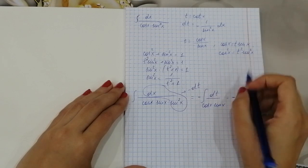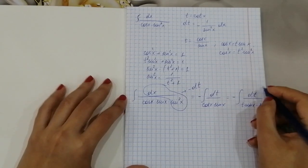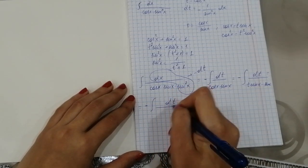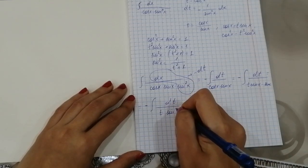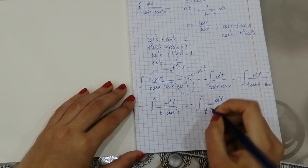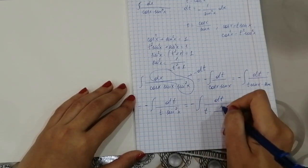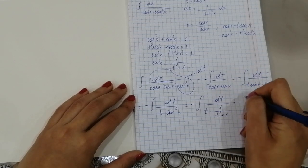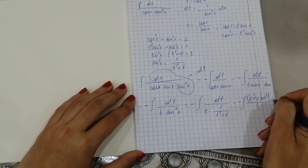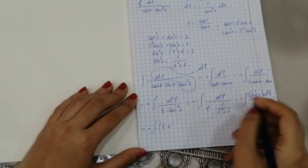Since cosine x equals t times sine x, substituting gives negative integral of dt over t times sine x times sine x, which is negative integral of dt over t times sine squared x. Using sine squared x equals 1 over (t squared plus 1), this becomes negative integral of (t squared plus 1) dt over t, which equals negative integral of (t plus 1 over t) dt.